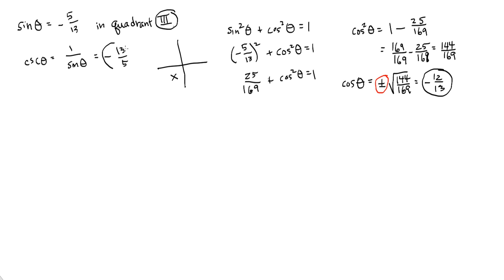So, so far I've got two of them. Actually I've got three of them if you count the original sine. Secant should be pretty straightforward now. Secant is the reciprocal of 1 over cosine. So that's going to be negative 13 twelfths. So far so good. So my last two are tan and cotan.